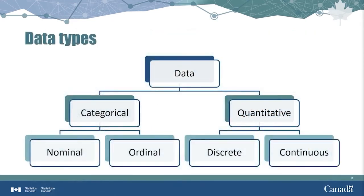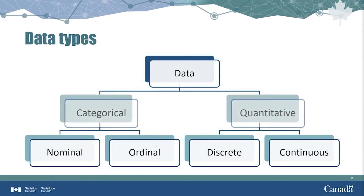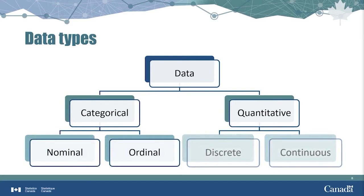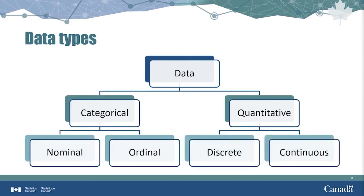Data can be divided into two main categories: categorical and quantitative. Categorical data can be further subdivided into nominal and ordinal data. Quantitative data can be discrete or continuous and are also known as numerical data. These concepts are explored further in the next few slides.